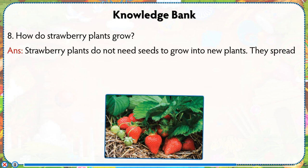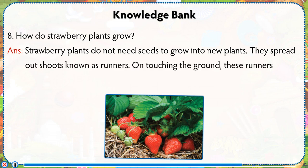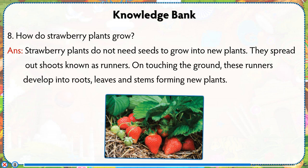How do strawberry plants grow? Strawberry plants do not need seeds to grow into new plants. They spread out shoots known as runners. On touching the ground, these runners develop into roots, leaves and stems, forming new plants.